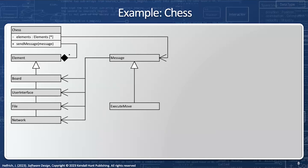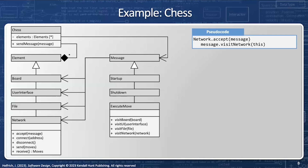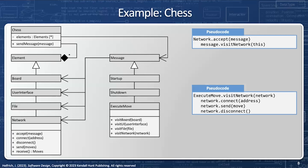What kind of messages am I going to have? Execute move is one version of a message, but also shut down and start up. Network has specific functionality like connect, disconnect, send, and receive, which are unique to network, but of course it has a generic accept. Execute move is going to know about visiting the board, visiting the user interface, visiting the file, and visiting the network. Visit network is going to know about network.connect, network.disconnect, network.send, and network.receive. So network gets a generic message and it's going to say it doesn't know what to do with it — network knows nothing about messages — so it calls messages.visitNetwork. Visit network knows how to convert this message into specific calls to connect, disconnect, send, and receive. So executeMove.visitNetwork will say: connect to this address, send a move, and then disconnect — that's how execute move interfaces with network.